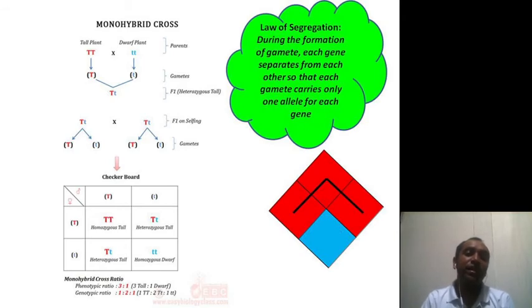Now you cross them again. Capital T will fuse with capital T, we will get capital T capital T. The next one, capital T fuses with small t, so you're getting capital T small t. The next one, capital T fuses with small t, so you get capital T small t. Small t fuses with small t, so you get small t small t.